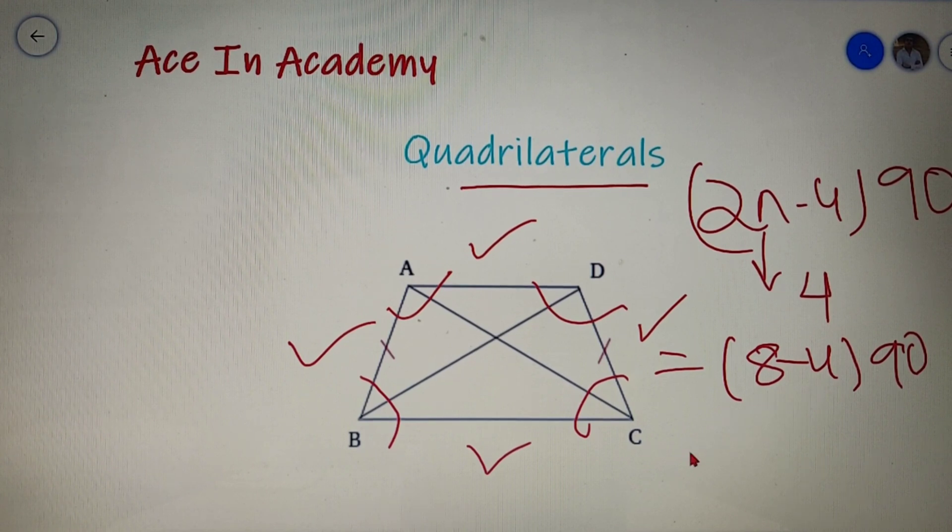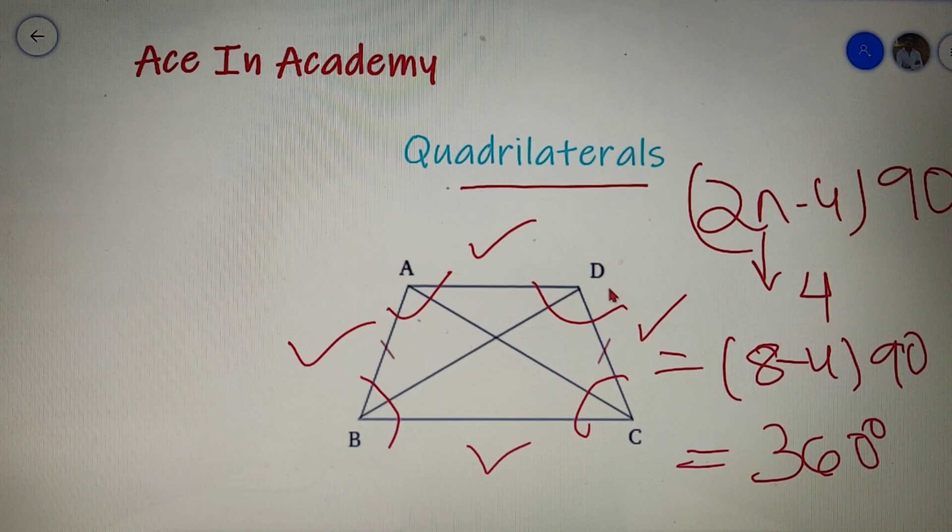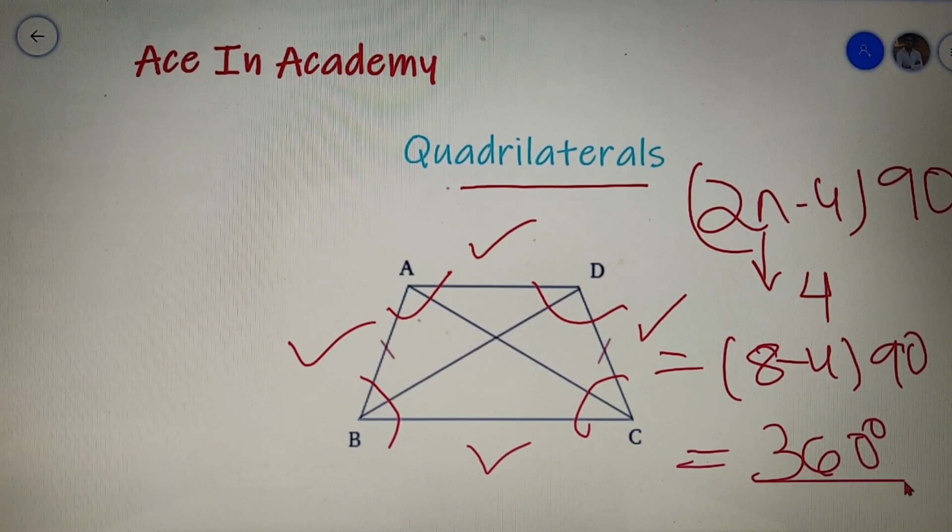Upon calculating you will get the final answer as 360 degrees. So I can say that the sum of angles of a quadrilateral is equal to 360 degrees.